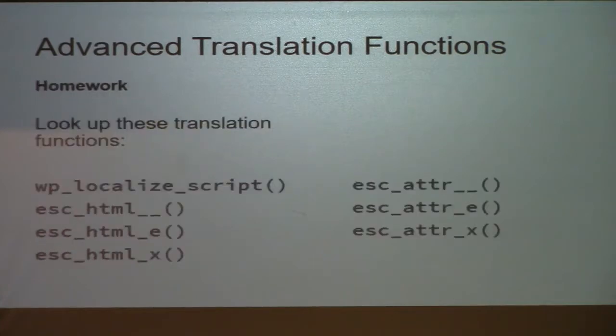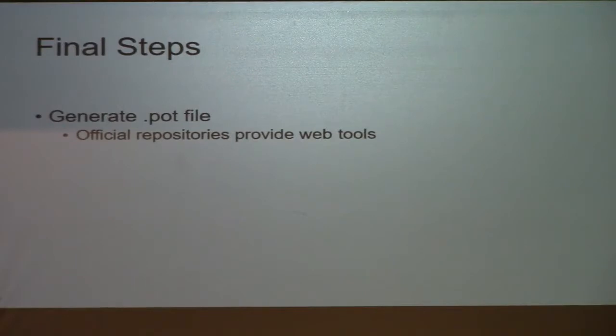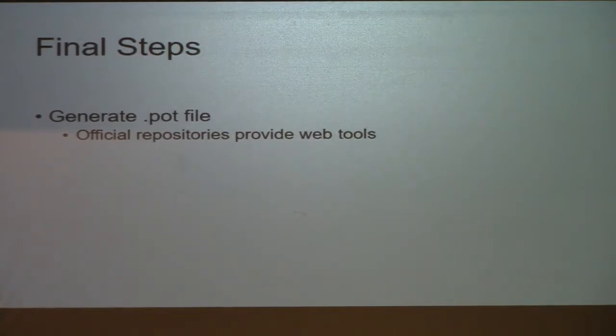I don't have time to go over all the advanced functions, but here's some extra credit homework — go home and look these up. These slides will be available so you don't need to scribble them down. So you've gone through your plugin, wrapped all your text in internationalization functions, and now you're ready for some final steps. The first thing you need to do is generate a template file — these are called POT files. These are basically a dictionary of all the text you need translated in your plugin or theme. The official repositories have web tools to generate this: when you upload your plugin, you can click a button and it'll create and download the POT file for you.